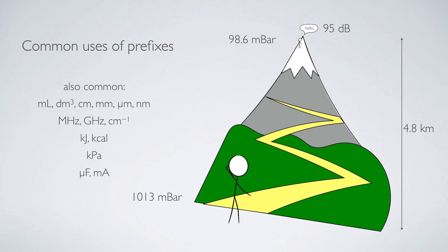Kilopascals are another version of a unit for pressure. If we start to talk about electricity, we start to see microfarads and milliamps, but these prefixes occur everywhere.